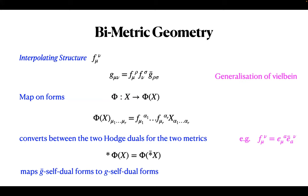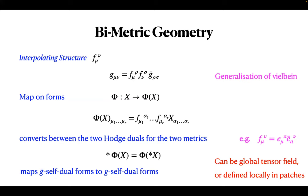There are many other solutions. In some cases this might be a global tensor field, or more generally it could only be defined locally in patches. The vielbeins are defined locally in patches and in overlaps between patches are related by Lorentz transformations or tangent space rotations, as well as diffeomorphisms, leading to corresponding transition functions for these Fs, which are worked out in the paper. These maps can either be local or global, and all I need is that they exist locally in patches.